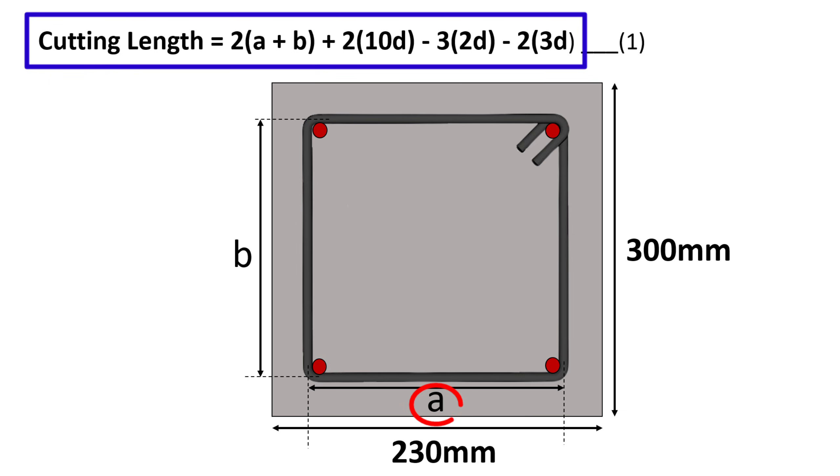where a is the center to center distance between the extreme vertical bars of the stirrup along the width of the beam, and b is the center to center distance between the extreme horizontal bars of the stirrup along the depth of the beam.